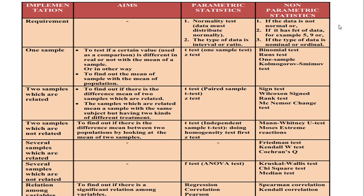Next, if we have two related samples, the aim is to find out if there is a difference in the mean of two related samples. Related samples mean the same subjects but with two different treatments. Go to parametric statistics first — don't forget to do the normality test. If the normality test shows the data distribute normally, you use the paired-sample t-test.